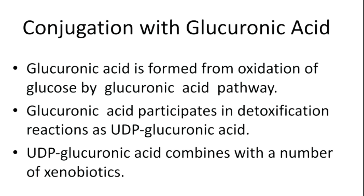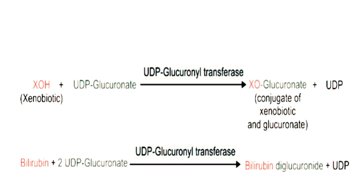The most important conjugating agent is glucuronic acid, formed in the body by the uronic acid pathway. Its active form UDP-glucuronic acid combines with a number of xenobiotics. In the general reaction, XOH (the xenobiotic) reacts with UDP-glucuronic acid, catalyzed by glucuronyl transferase, which transfers the glucuronate to XOH, converting it into XO-glucuronate.